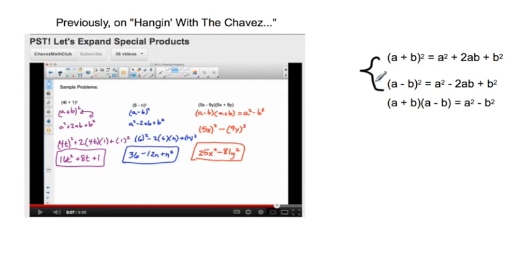Or if you had a minus b in parentheses squared, that would expand to a squared minus 2ab plus b squared. So here we were talking about perfect square trinomials.